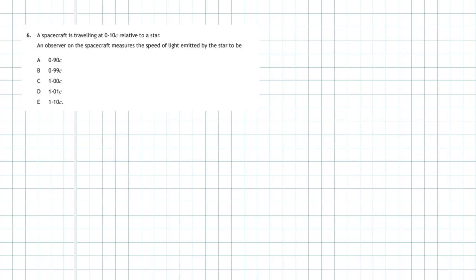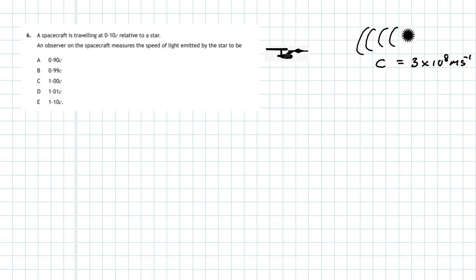Question 6 from section 1 of the 2018 Higher Physics exam. A spacecraft is travelling at 0.10C relative to a star — that is, 0.10 times the speed of light. C is the symbol for the speed of light, which equals 3 times 10 to the power 8 metres per second. The spacecraft is approaching the star at 0.10C. An observer on the spacecraft measures the speed of light emitted by the star — what do they measure?